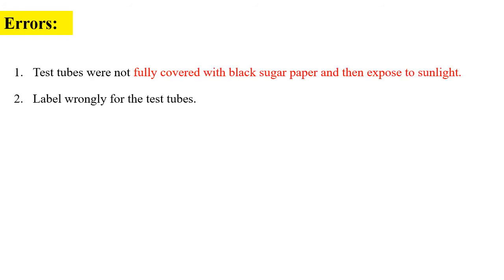Regarding experimental errors: the first error is that test tubes were not fully covered with black sugar paper. If not fully covered, they will be exposed to sunlight — you need to think about why that is problematic. The second possible error is labeling test tubes wrongly or mixing up the solutions.